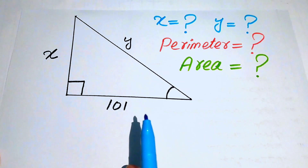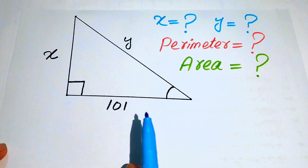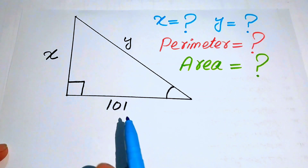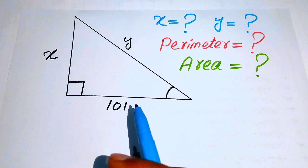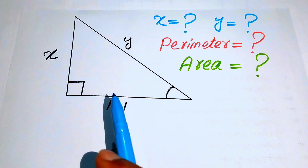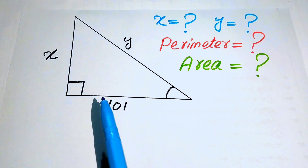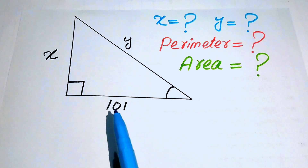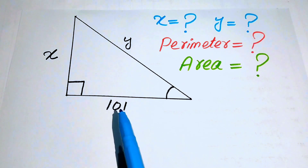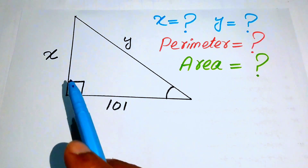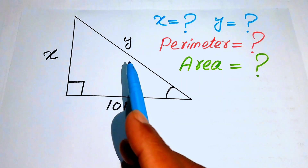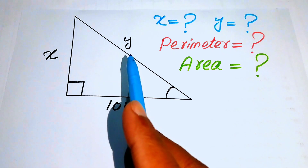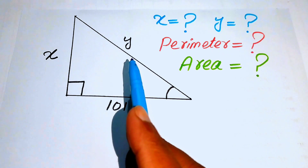Hello everyone, welcome back to the Map of Mathematics. In this video we are going to solve a nice math geometry challenge. We have a right triangle in which one side length is 101 and the other two side lengths are unknown, denoted by x and y.